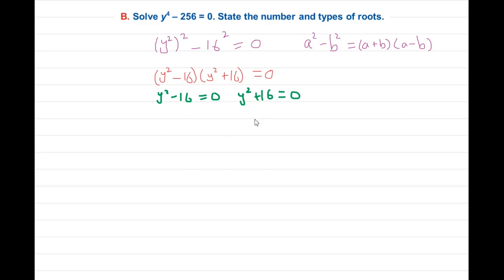Now we can transfer the 16 to the other side: y squared equals 16, and y squared equals negative 16. If I can factorize a number further, I will factorize it. As I can see, I can factorize it by taking the square root of this, because I need y equals plus or minus 4.